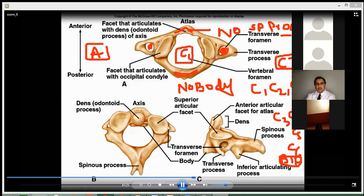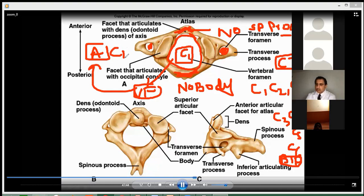If there is no body present, if there is no spinous process present, and the vertebral foramen is very large, it means it is your cervical one vertebra. Got it?